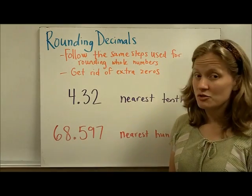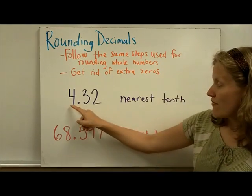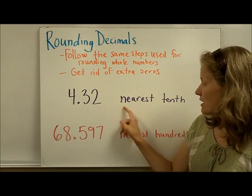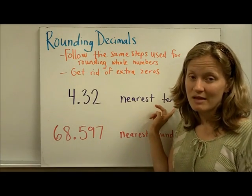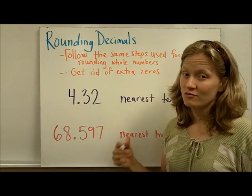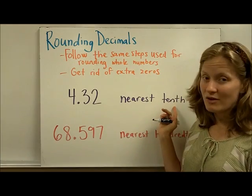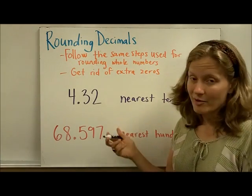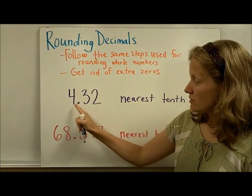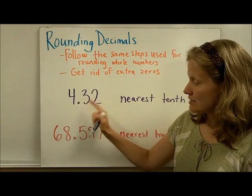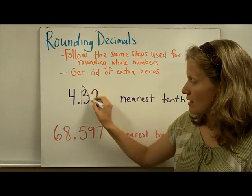So let's take a look at two example problems. We have 4.32, and we've been asked to round it to the nearest tenth. So just as in rounding whole numbers, your first job is to find the place value that you were told to round to. I'm going to use the rounding rocket. This is my ones place, then the tenths place, so that is the rocket.